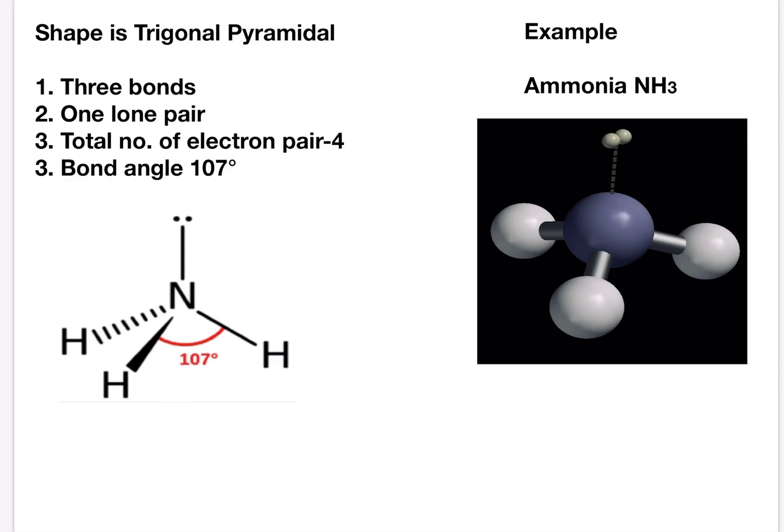Ammonia has three bonding pairs of electrons and one lone pair. As lone pair-bond pair repulsion is greater than bond pair-bond pair repulsion, the bonding pairs of electrons are pushed closer together. This gives ammonia molecule a pyramidal shape. The HNH bond angle is 107. We call this a pyramidal structure.